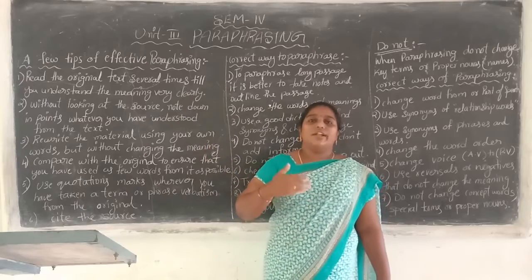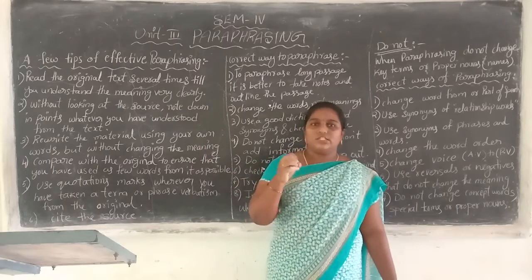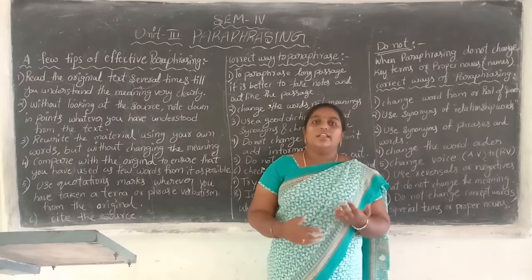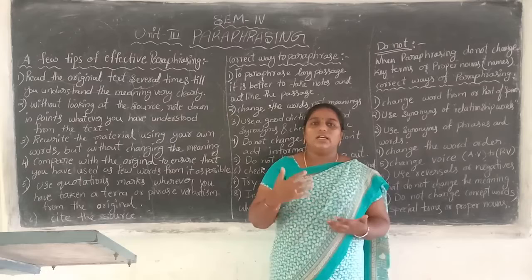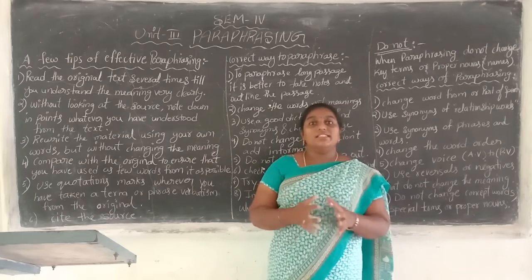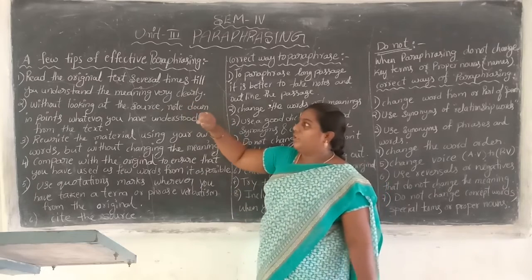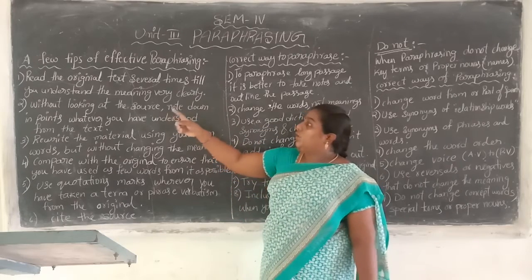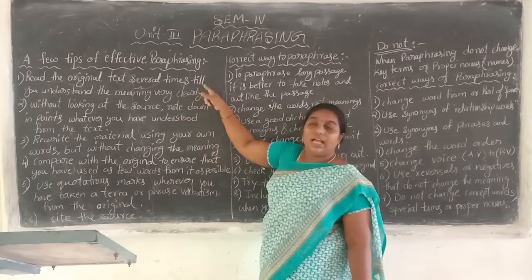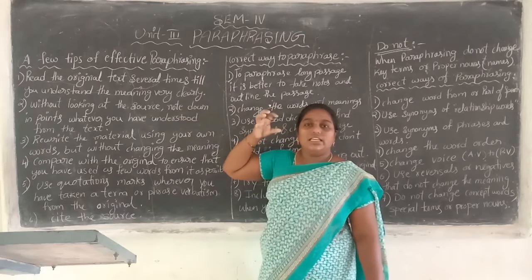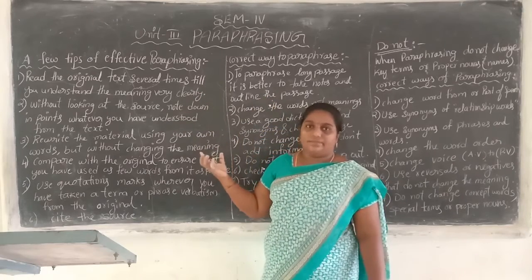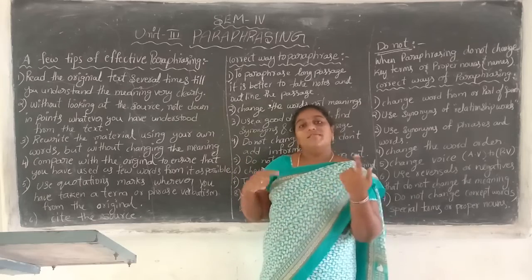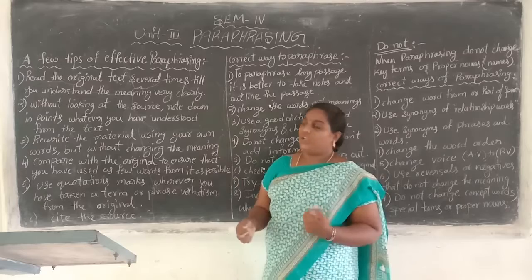Read the original text several times until you understand the meaning very clearly. If you read once, you get some points in your mind. If you read a second time, you get some extra information from that paragraph. Each time you read, you improve your understanding. You maintain more clarity by reading several times. Read the whole context up to the point where you get a very clear idea of the meaning. This is the first tip — if you read it very well, you can paraphrase the topic easily.